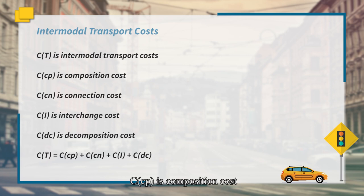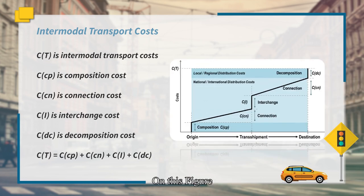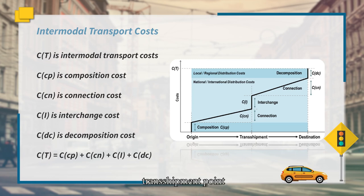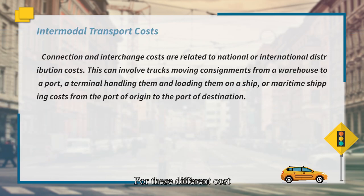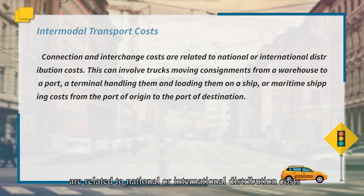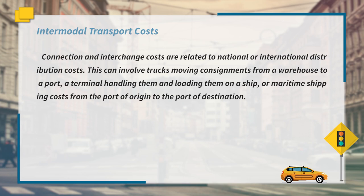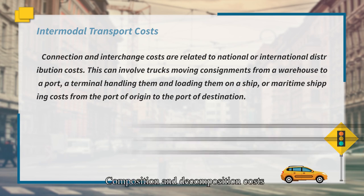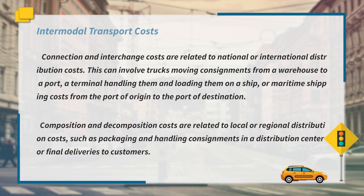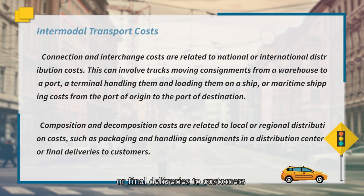The figure shows the intermodal cost function between an origin and destination using an intermediate transportation mode. Connection and interchange costs are related to national or international distribution costs — they can involve trucks moving from a warehouse to a port, or terminal handling and loading onto a ship. Composition and decomposition costs are related to local or regional distribution costs, such as packaging and handling, consignments in a distribution center, or final deliveries to customers.